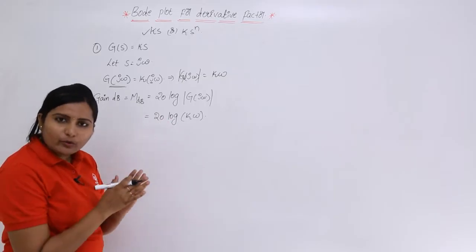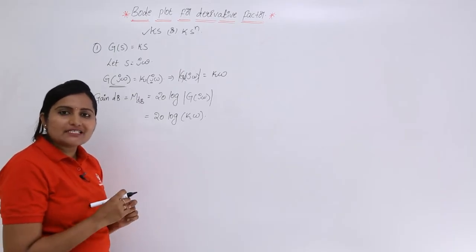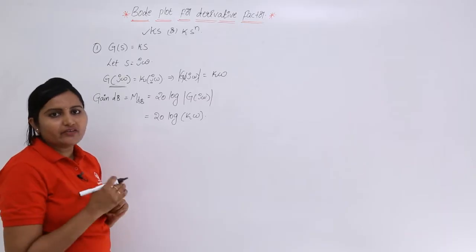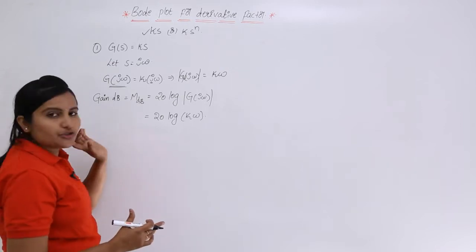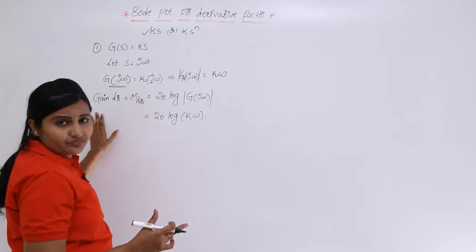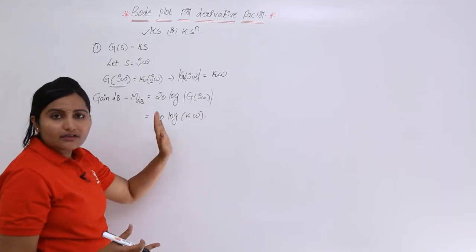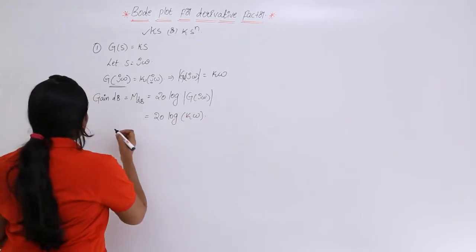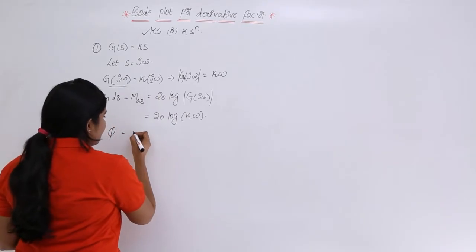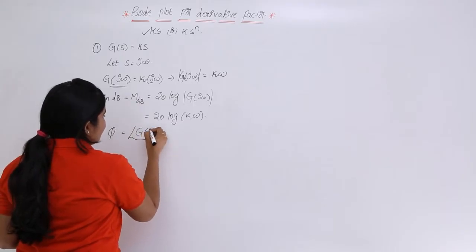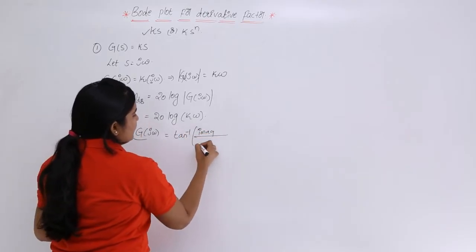To draw the Bode plot — which is the combination of magnitude plot and phase plot — both plots share the same x-axis, which is angular frequency ω. The y-axis differs: for the magnitude plot, y = 20 log(Kω), and for the phase plot, y is the resultant phase φ. To calculate φ, we use φ = angle of G(jω) = tan⁻¹(imaginary part / real part).